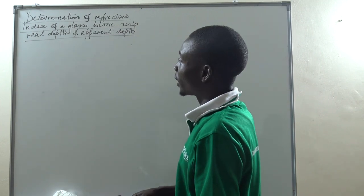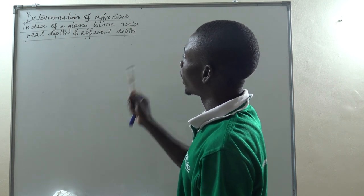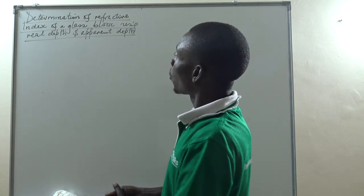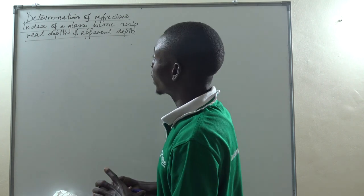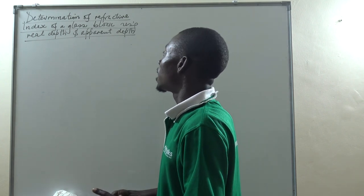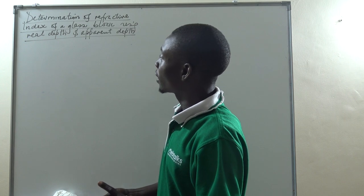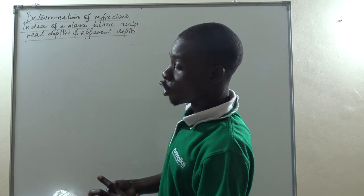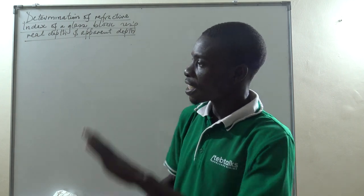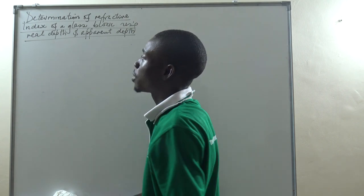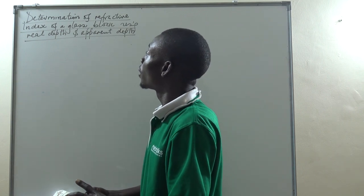We are here to look at the determination of refractive index of a glass block using real depth and apparent depth. What is the procedure involved in determining the refractive index of a glass block using this idea? We had already looked at determining the refractive index of a glass block using optical pins. Now, what do we do here? Let's first try describing it before writing something down.